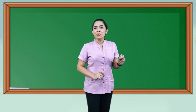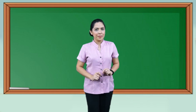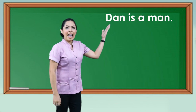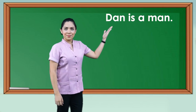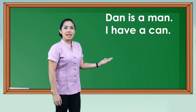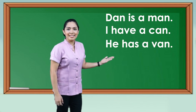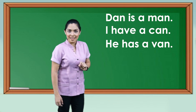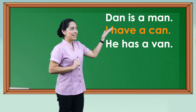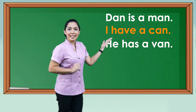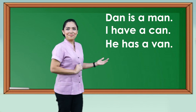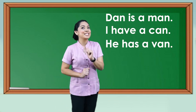Great job! Now let us level up. Let us try to read these sentences all together, but allow me to do it first for you. Dan is a man. I have a can. He has a van. Repeat after me: Dan is a man. I have a can. He has a van. Well done, children! Now it's your turn.